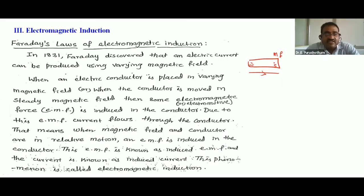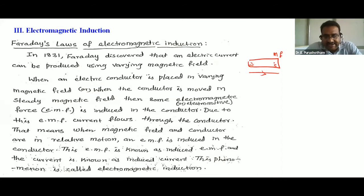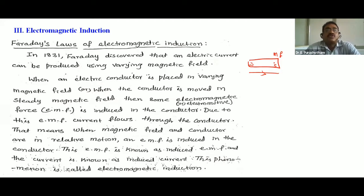In 1831, Faraday discovered that the varying or changing magnetic field produces some current in the conductor. That current is called induced current, and that EMF is called induced EMF. This phenomenon is called electromagnetic induction.